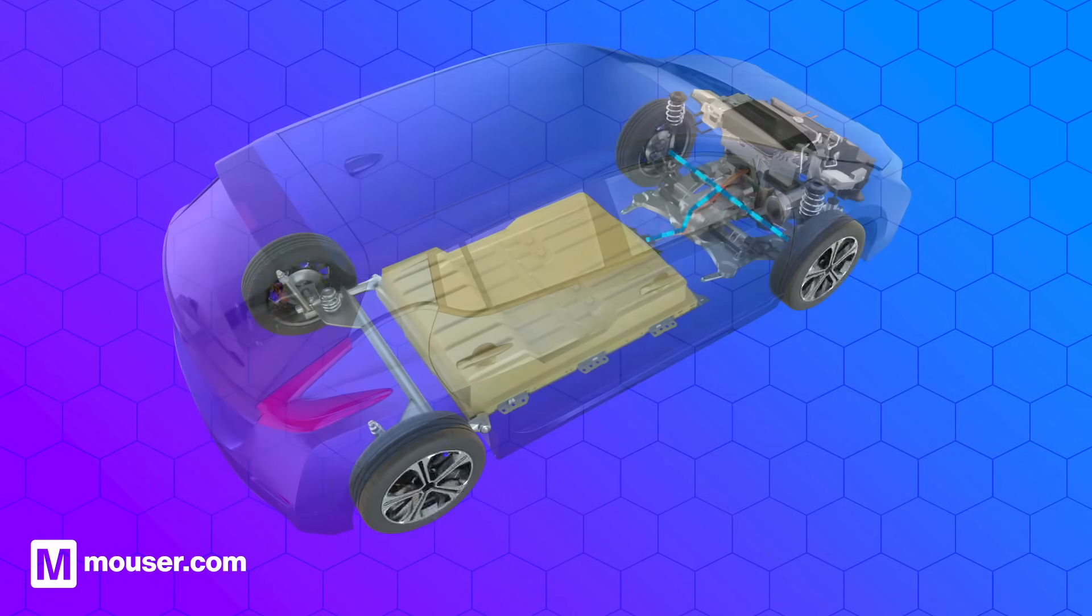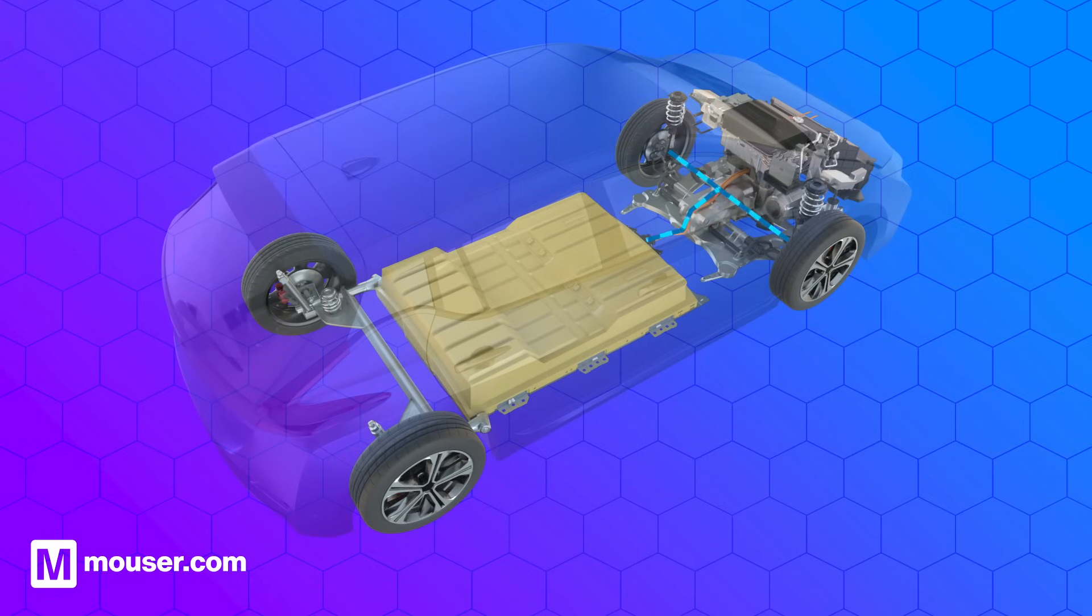IGBTs are widely used as switching devices in the inverter circuit for driving small to large motors. For instance, in an electric car, IGBTs control the power flow from the battery to the electric motor, enabling efficient and precise acceleration.